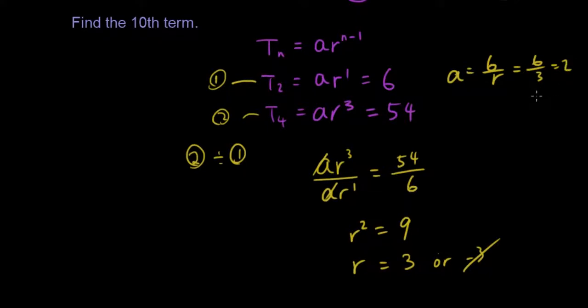Let's test that out. We have 2 times 3 is 6, and here we have 2 times 3 to the power of 3, which is 2 times 27, which is 54. So we've done the checks. The check has worked for both of these equations.